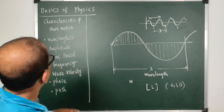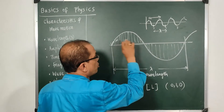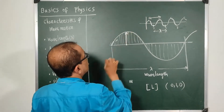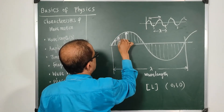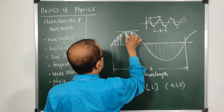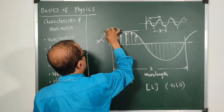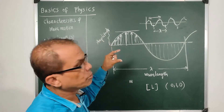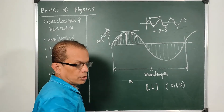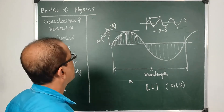Next we go for amplitude. Amplitude is the maximum displacement of a particle during wave motion from its mean position. If this is the mean position, these intermediate values are not maximum — the particle goes to the maximum value at the crest or trough. That maximum displacement is called the amplitude, symbolized by the letter A.